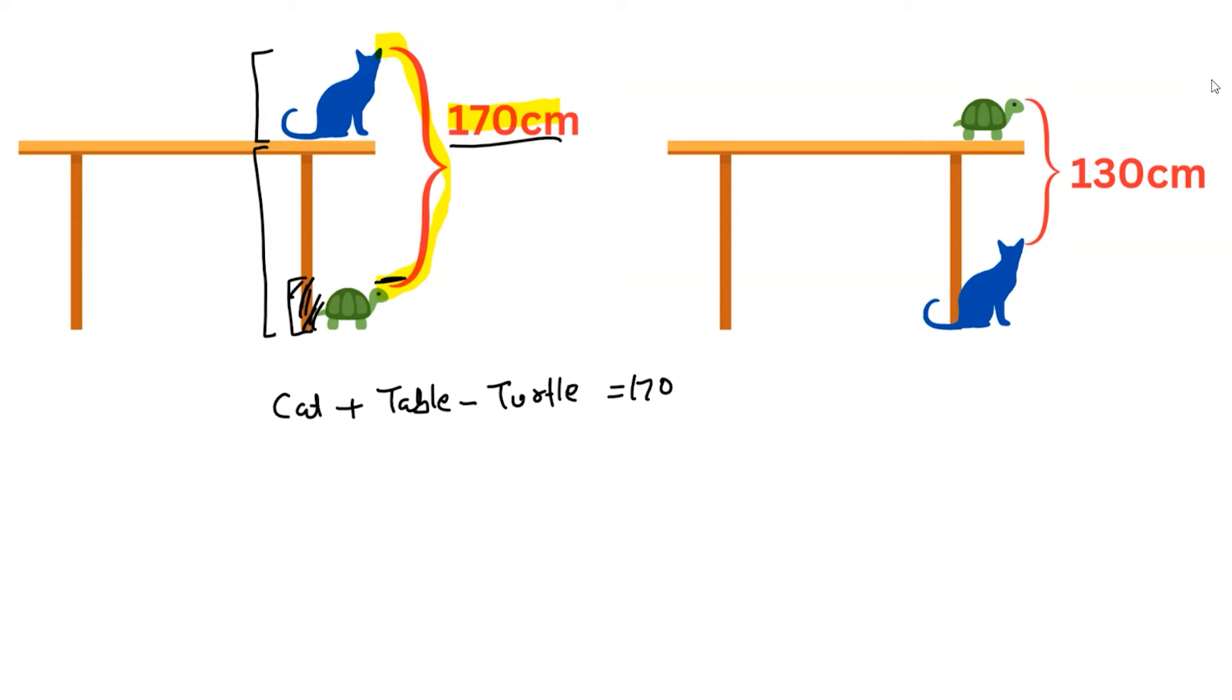Now in the second condition, starting from the head of the turtle up to the head of cat, this total length is given as 130 centimeters. In this case, the height of the turtle plus the height of the table minus the height of cat. So height of turtle plus table minus height of cat is given as 130 centimeters.